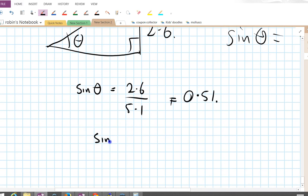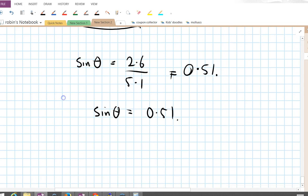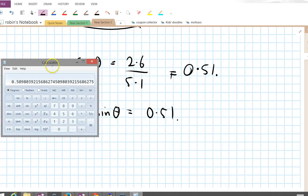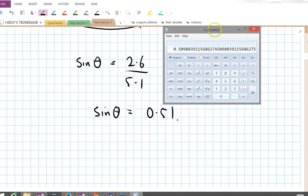So sine theta equals 0.51. What does that tell us? Well, we can find a value of theta with sine theta equals 0.51. Let me try to solve this equation by hand.